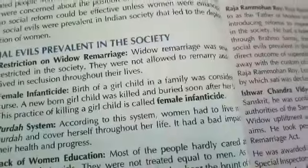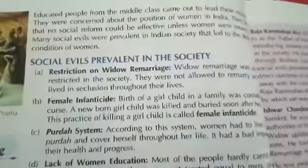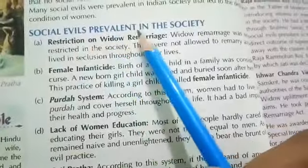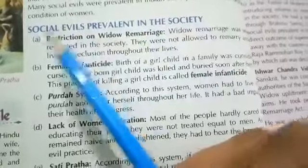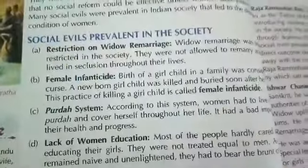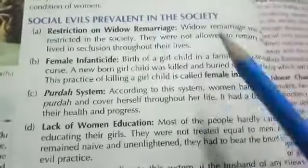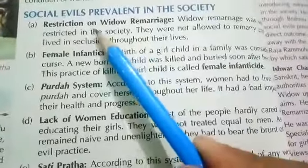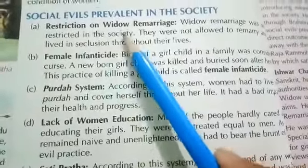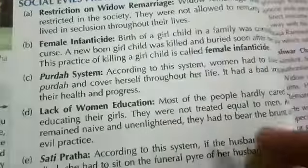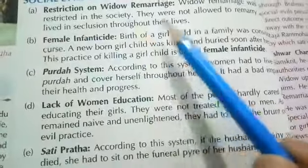Women's conditions were very bad. Next are the social evils prevalent in society. There were a lot of problems in society. First, there were restrictions on widow remarriage — widows were not allowed to remarry.